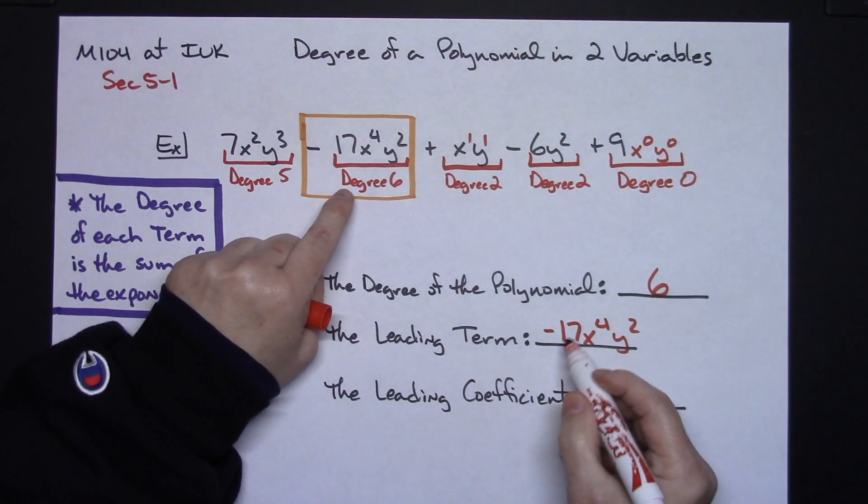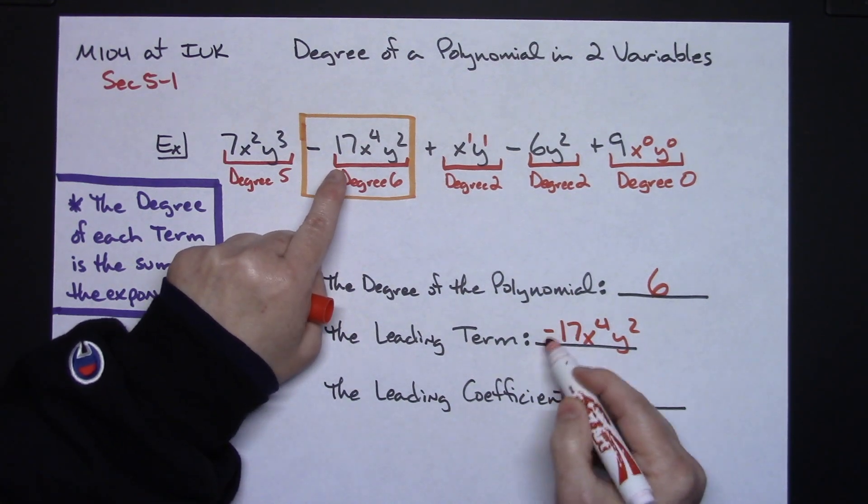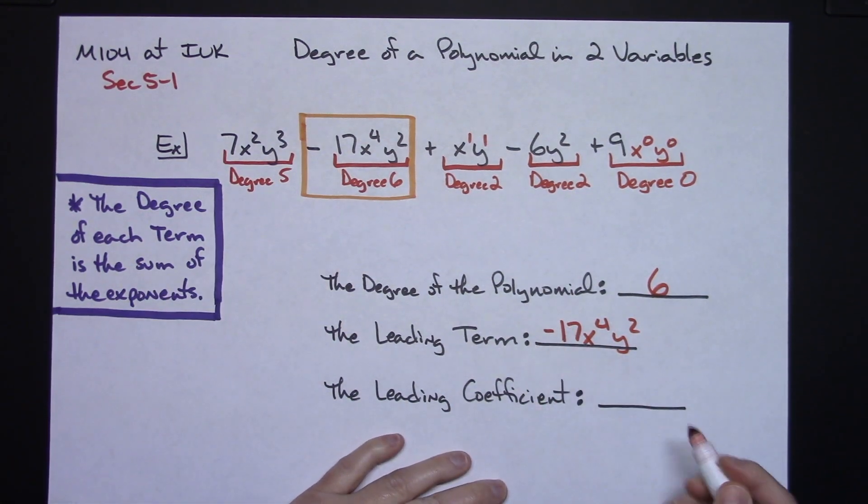The leading coefficient is always the number in front of the coefficient, number in front of that term. So the leading coefficient is negative 17.